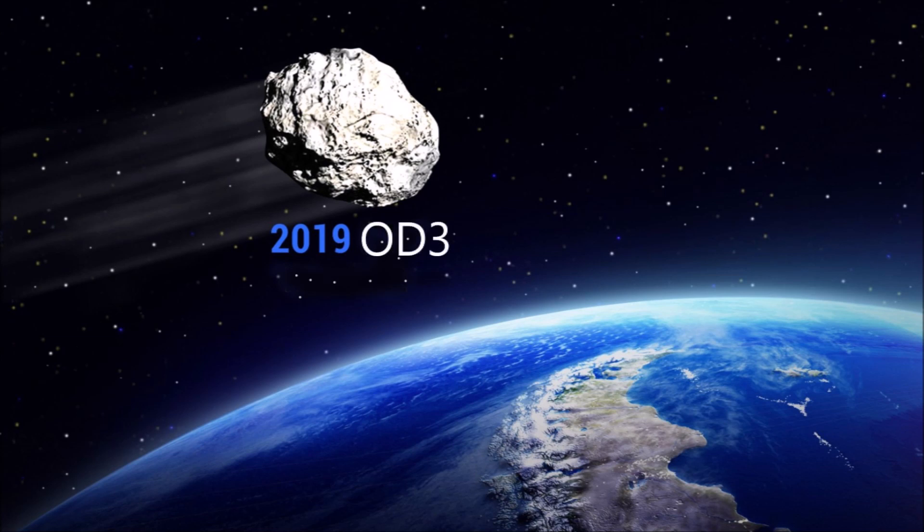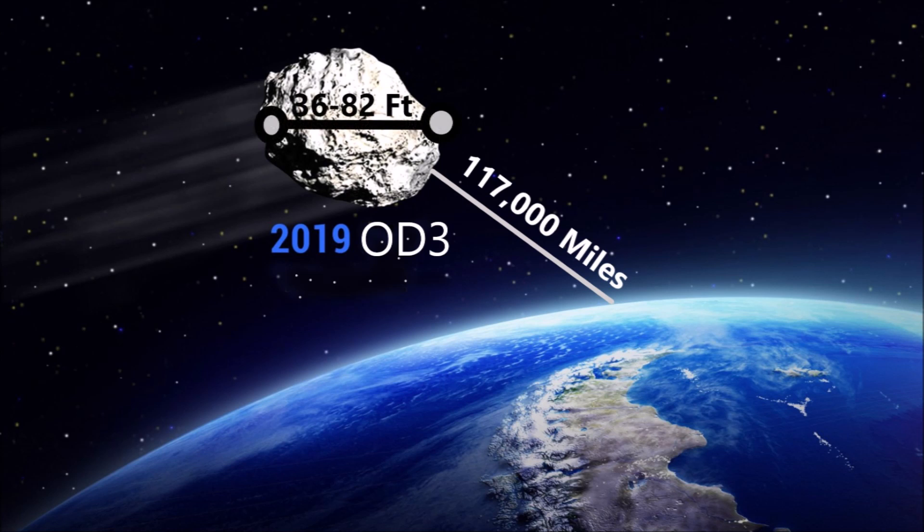Two newly discovered asteroids flew past the planet within a 24-hour period. On July 28th, a space rock designated 2019 OD3 came within 117,000 miles of the earth. It was first observed by the ATLAS MLO in Mauna Loa, Hawaii just one day prior. Its estimated diameter was between 36 and 82 feet and it was traveling at 40,264 miles per hour.